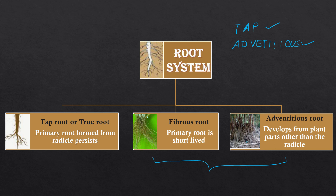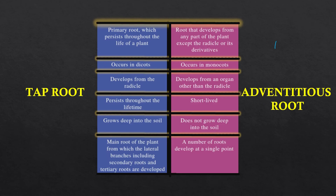The tap root or true root is the primary root formed from the radical and it persists. In fibrous root, the primary root is short-lived. Adventitious root develops from plant parts other than the radical — from other positions like the stem or leaves. Looking at basic differences: tap root is the primary root which persists throughout the life of the plant, while adventitious root develops from any part of the plant other than the radical or its derivatives.